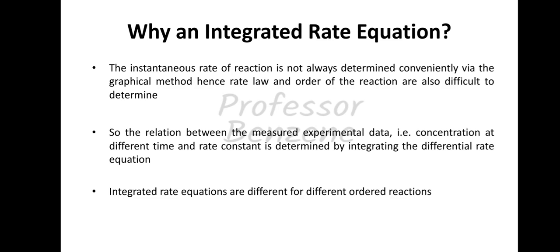The instantaneous rate of a reaction, which we have studied in the previous video, is not always accurate — in the graph there is not always an accurate value. Because the instantaneous rate of a reaction is not accurate, the order of the reaction and rate law is also difficult to determine. So, the relation between the measured experimental data — that is, the concentration at different times and the rate constant — is determined by integrating the differential rate equation. That is why we integrate the differential rate equation and take those values from the graph.